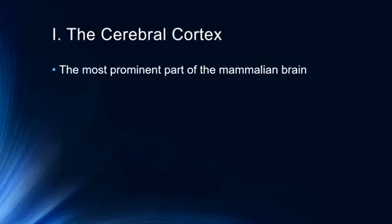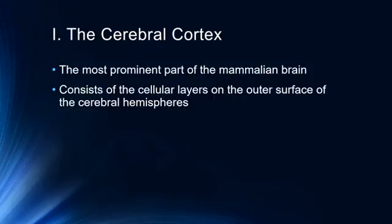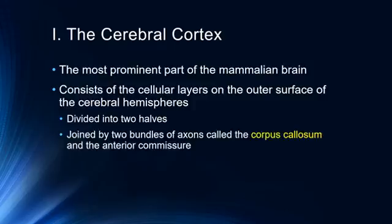The cerebral cortex is the most prominent part of the mammalian brain, certainly the most prominent part of the human brain. It consists of six cellular layers on the outer surface of the cerebral hemispheres, called laminae, which we'll discuss shortly. The cerebral cortex is divided into two halves, or hemispheres, which are joined by two bundles of axons called the corpus callosum and the anterior commissure. This is how the two halves communicate with one another.